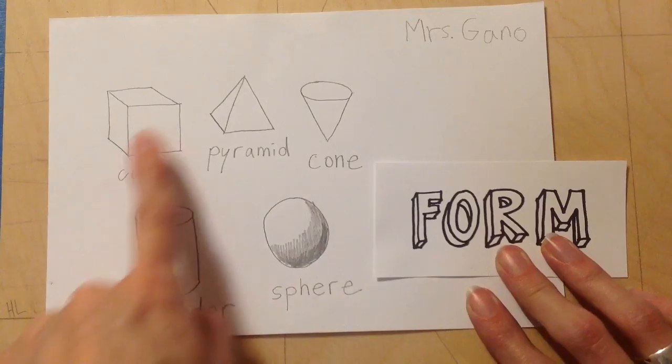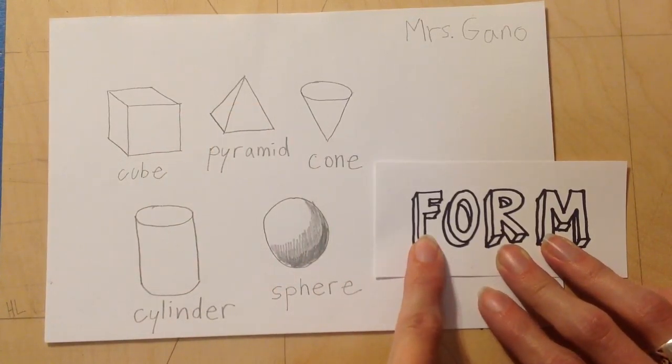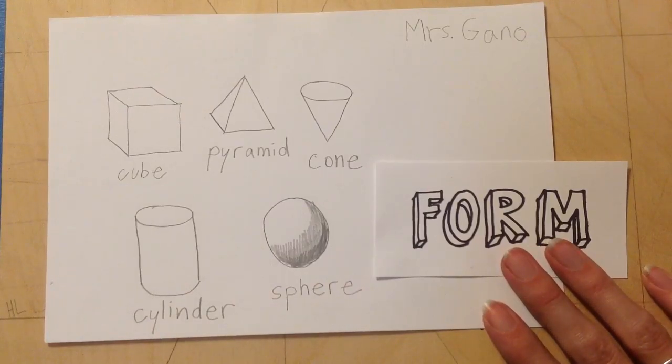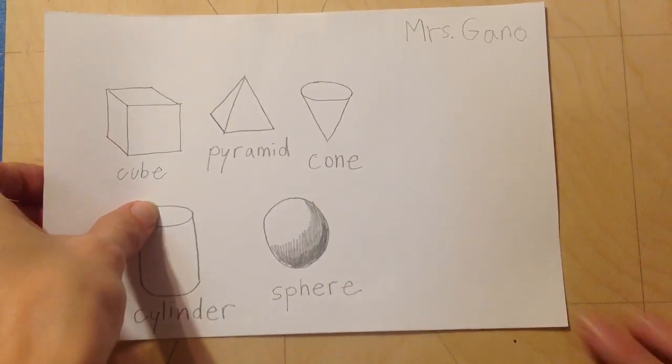I hope you learned a little bit about what those are and they're all different kinds of forms. Now, we are going to be making our drawing on the other side. So this is the back side of our paper. Turn it over.